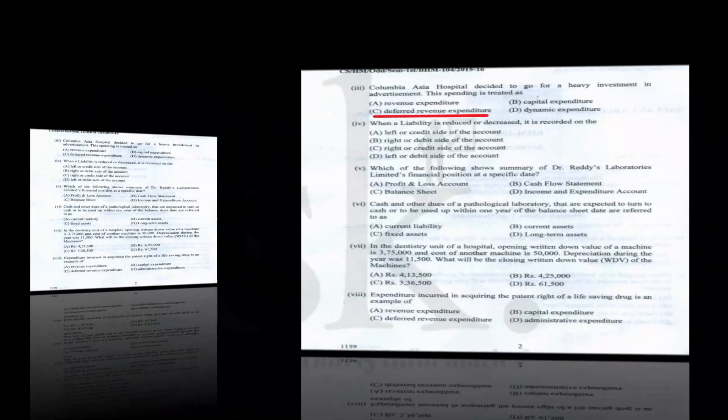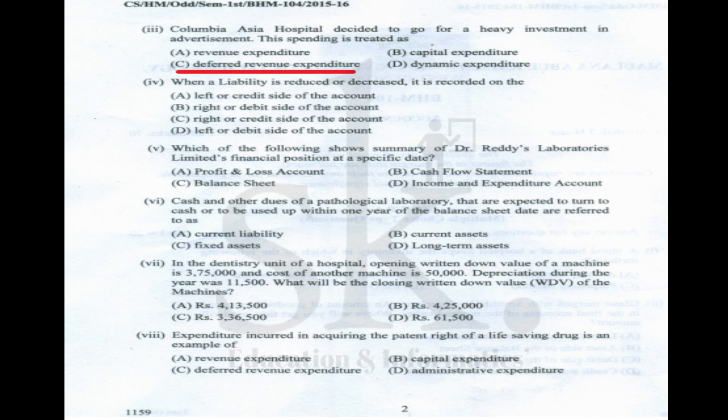Question number three: Columbia Asia Hospital decided to go for heavy investment in advertisement — this is deferred revenue expenditure, meaning the entire expenditure will not be shown in one year but will be amortized over the number of years within which the service is to be delivered.